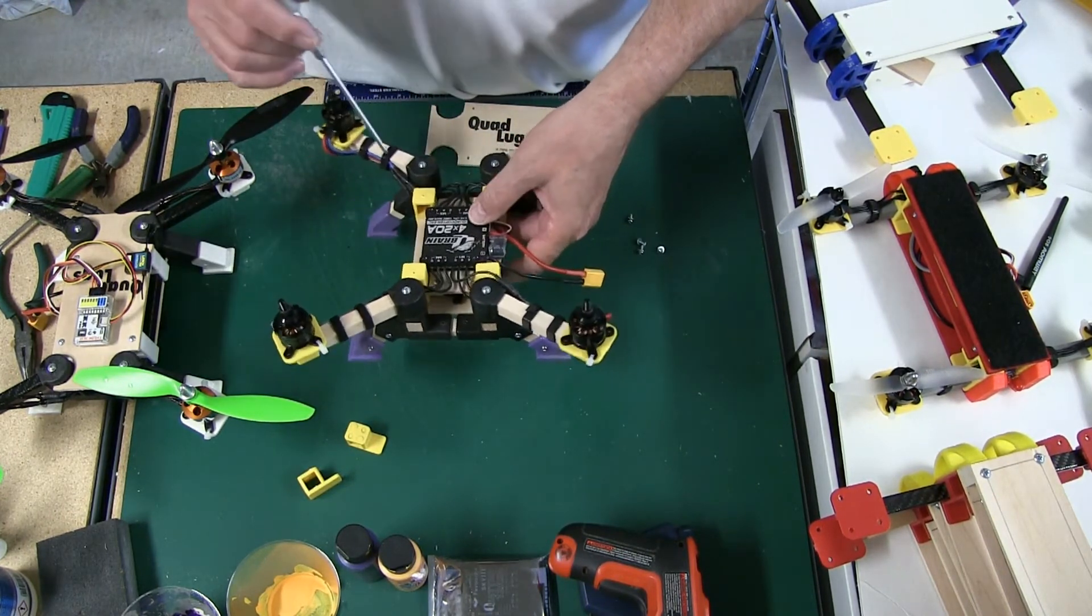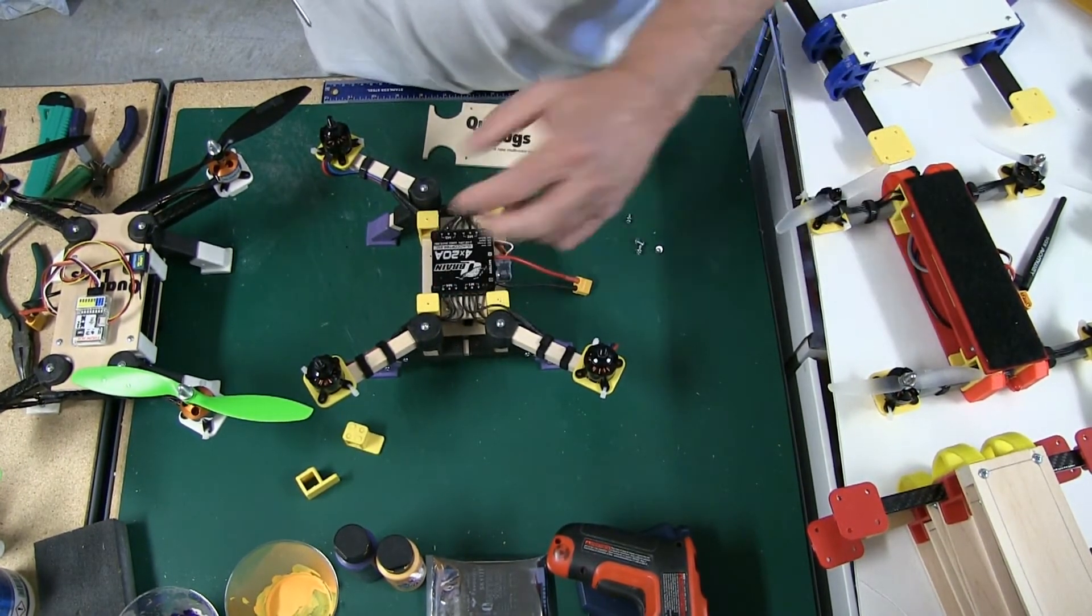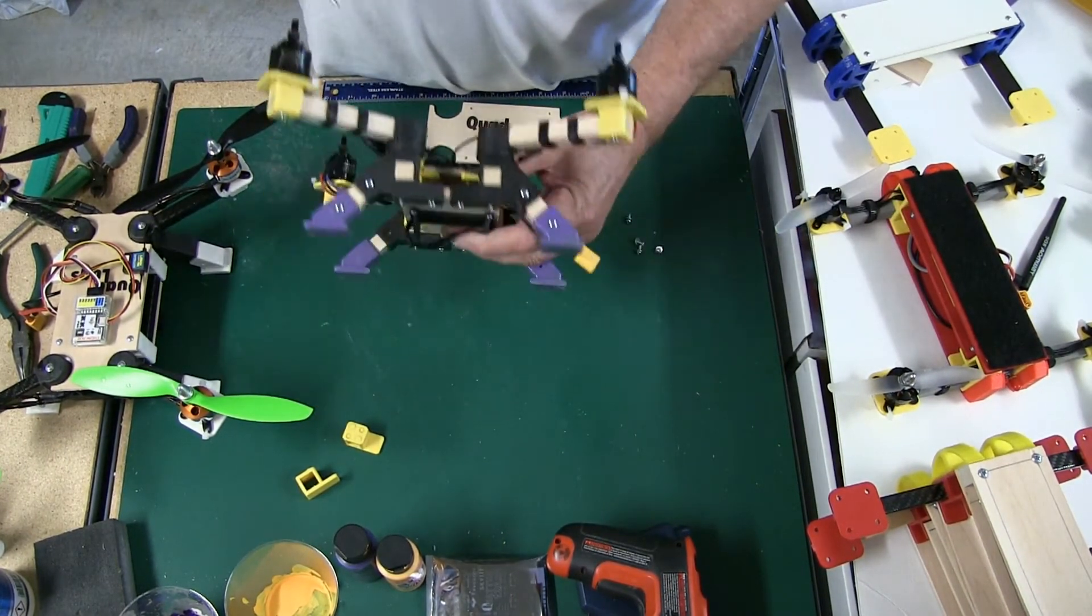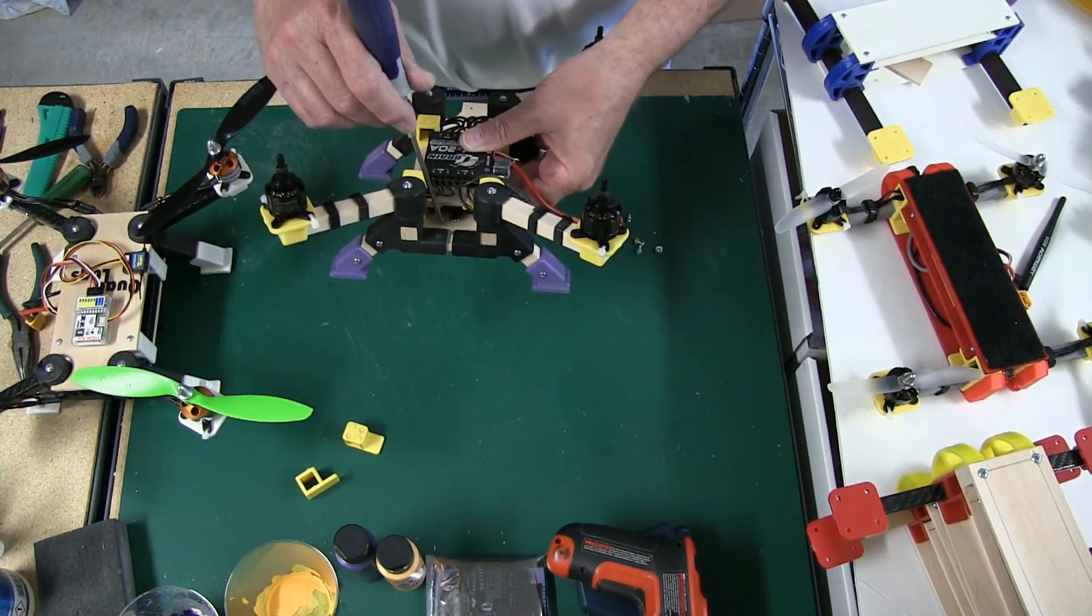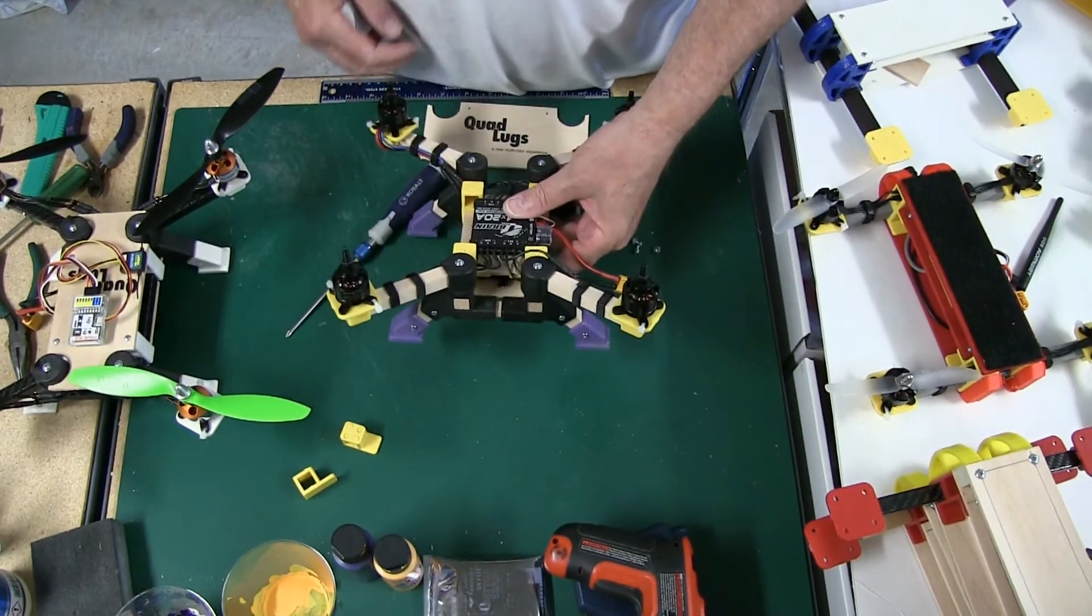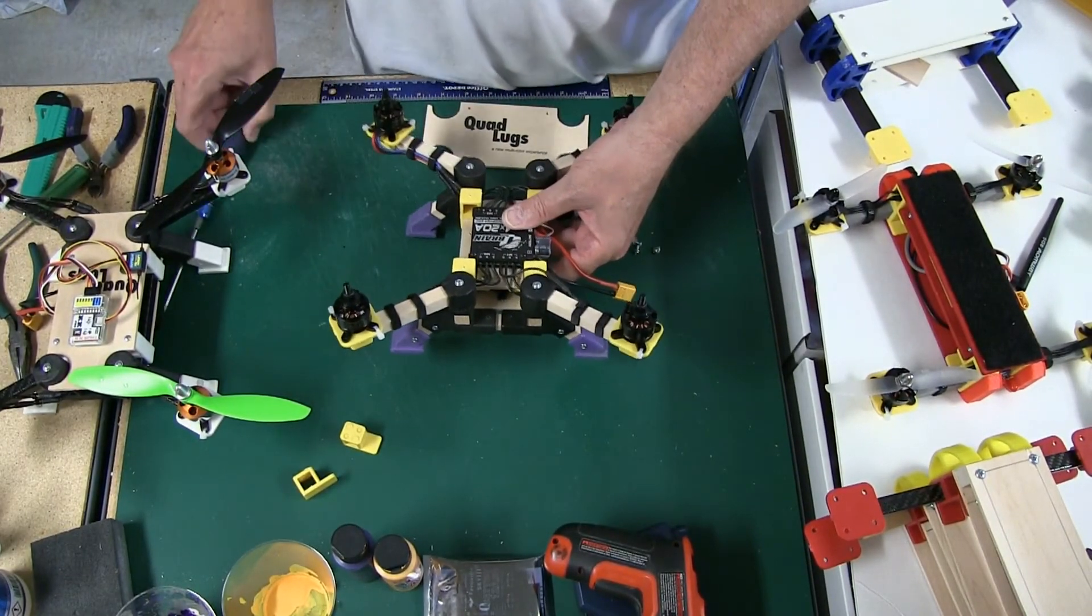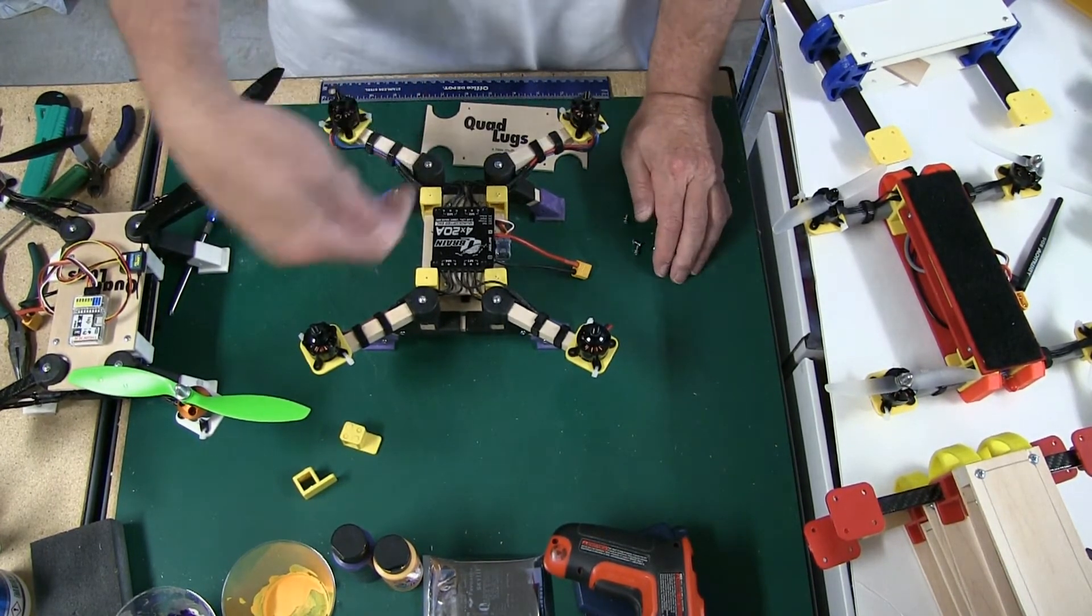You put four screws in, and then your ESC fastens to it. It can be removed at any time to get to your controller, which now your controller is going to be mounted on the bottom.